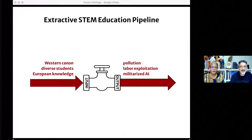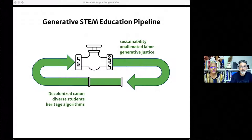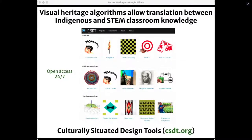For the past 20 plus years, Ron and I have been applying these heritage algorithms to the design of STEM education. But if we are merely diversifying the input to the STEM pipeline and allowing the output to be the same old labor exploitation, pollution, and militarized AI, we have failed. Instead, we need generative STEM education that can transform our techno-economy from extractive to circular flows. Our research has led to the development of a suite of software applications called CSDTs — Culturally Situated Design Tools. Visitors to the site have a variety of cultures and knowledge sources to explore. We have a CSDT for cornrow braiding, bead looming, yarn art, sci-fi, adinkra stamping, henna, and most recently, quilting.